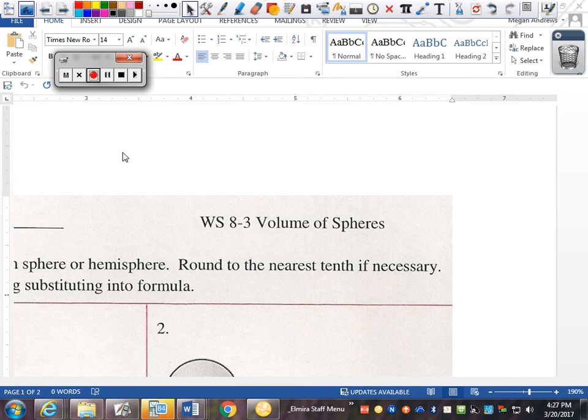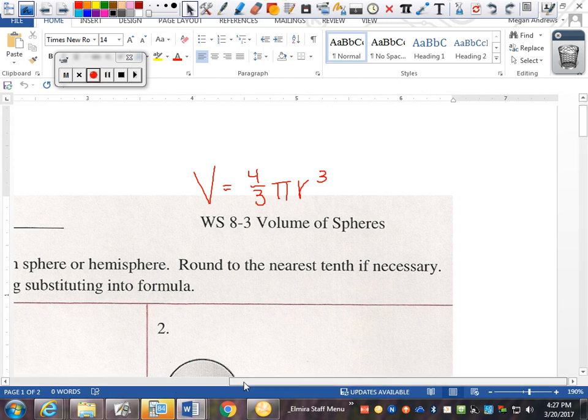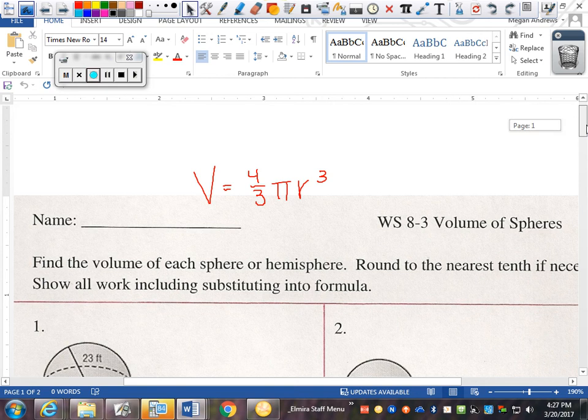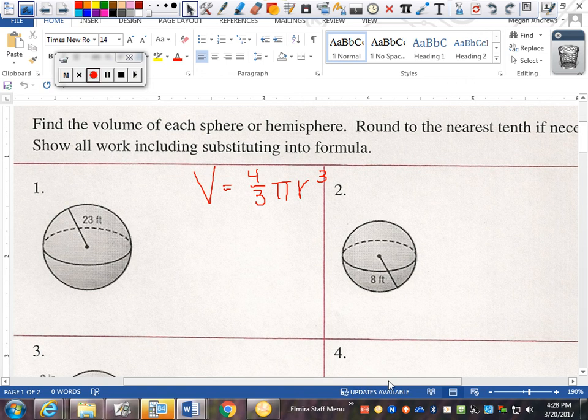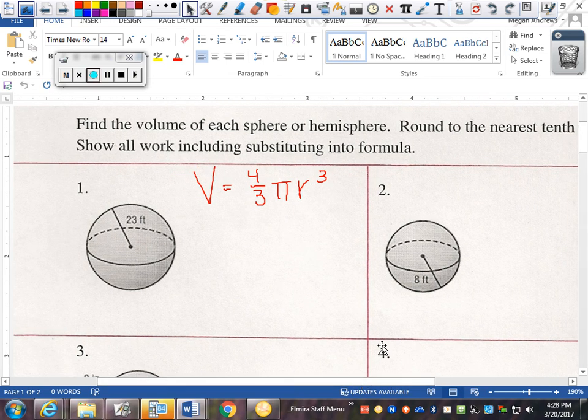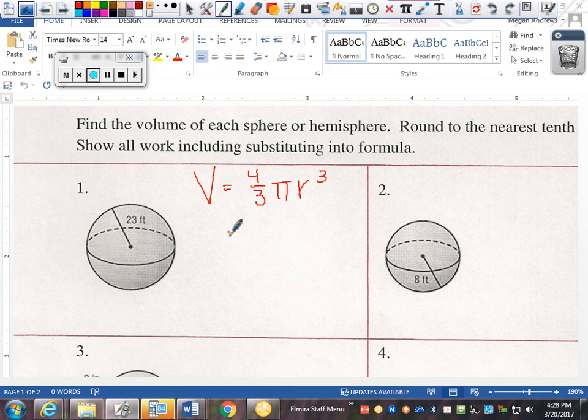All right, moving on to spheres. Volume equals 4 thirds pi r cubed. That's the formula you will write for each problem. So if I were doing number 1 on my sphere homework, I'd write my formula.